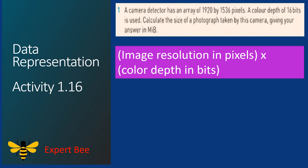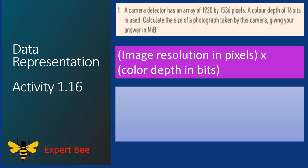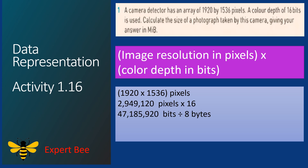First we will find the number of pixels: 1920 × 1536 = 2,949,120 pixels. Then we multiply with 16, the color depth, to get 47,185,920 bits. Then we divide by 8 to get the answer in bytes.